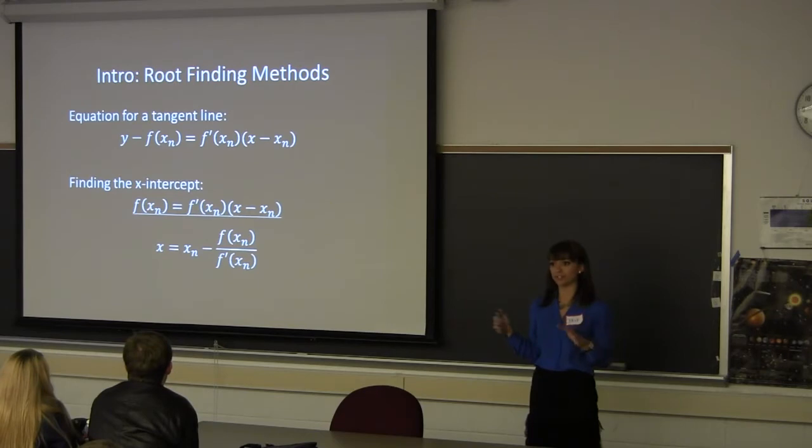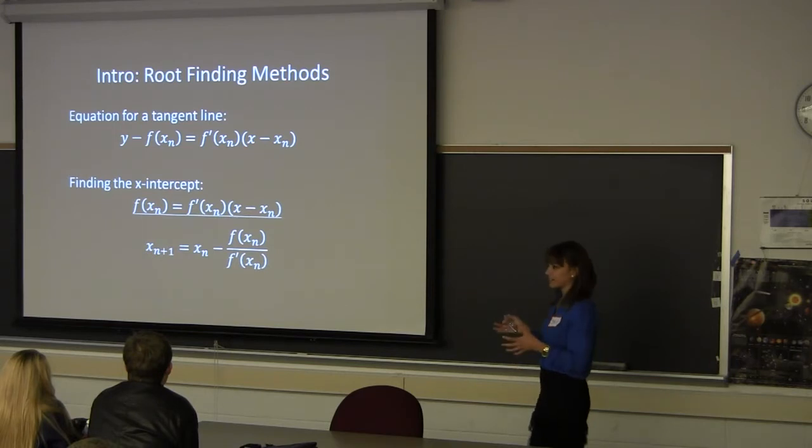Like I said, that equation for a tangent line is really crucial. It's the equation written above there. Finding the x-intercept is just basic algebra. You set that y equal to 0 and solve for x, which is the bottom equation. If I write it like this, it may look more familiar to many of you as Newton's method for finding roots.